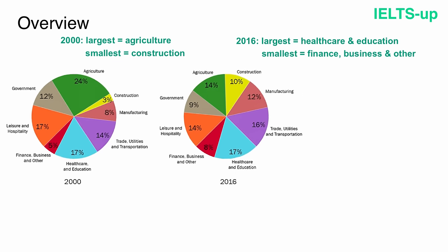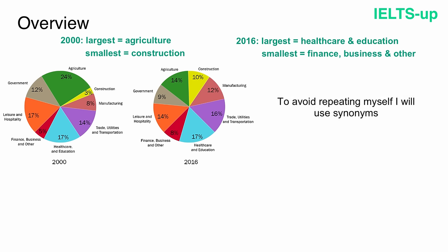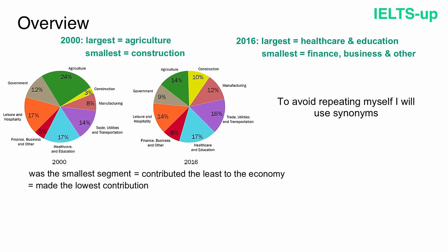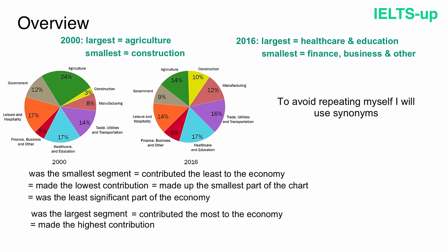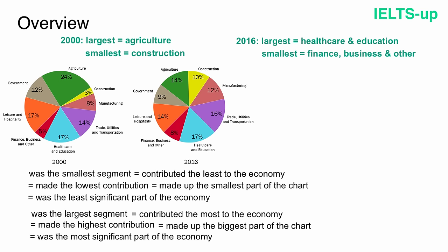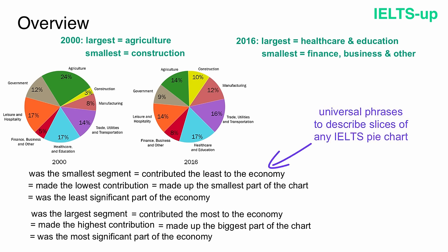Now let's write the overview using these key features. To avoid repetition, I will use synonyms. The phrase 'was the smallest segment' can be replaced with: 'contributed the least to the economy,' 'made the lowest contribution,' or 'made up the smallest part of the chart.' Similarly, 'was the largest segment' can be replaced with: 'contributed the most to the economy,' 'made the highest contribution,' 'made up the biggest part of the chart,' or 'was the most significant part of the economy.' These are universal phrases to describe slices of any IELTS pie chart.